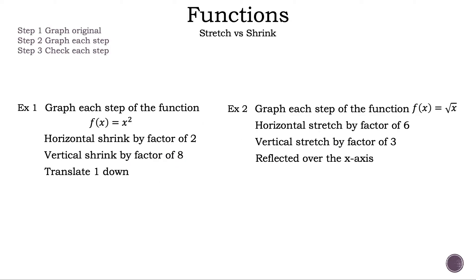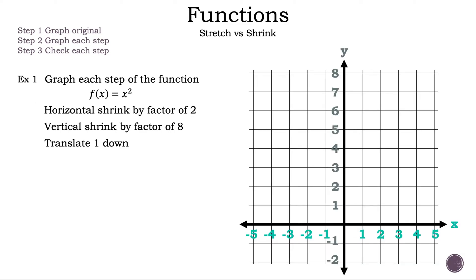Now let's take a look at the examples we're going to discuss in today's video. Let's take a closer look at example 1. The steps are: Step 1, graph original; Step 2, graph each step; Step 3, check each step. The question: graph each step of the function where we start with f(x) = x² and it has a horizontal shrink by a factor of 2, a vertical shrink by a factor of 8, and translates 1 down. First, let's write down f(x) = x², since that is the original function.